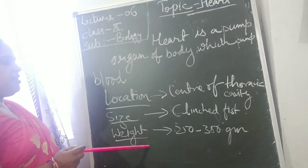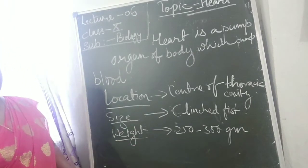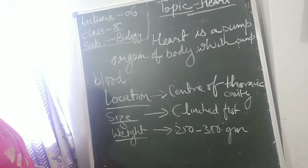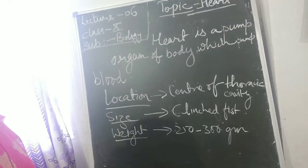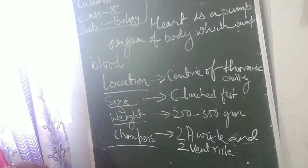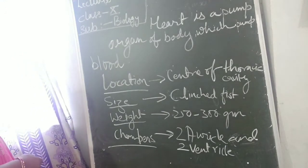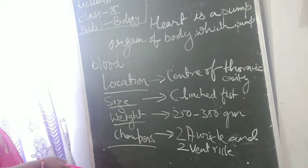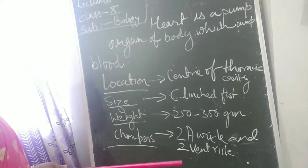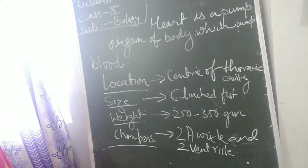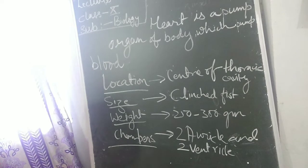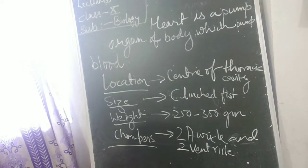The weight of the heart is generally about 250 to 300 grams in an adult human body. The heart mainly consists of 4 chambers: 2 auricles and 2 ventricles — that is, 1 left auricle, 1 right auricle, 1 right ventricle, and 1 left ventricle. These are the chambers where blood flows before passing to other body parts.